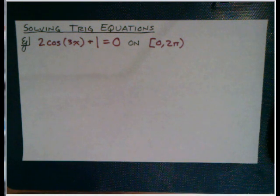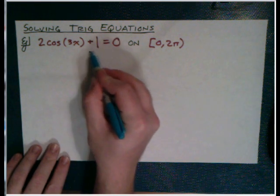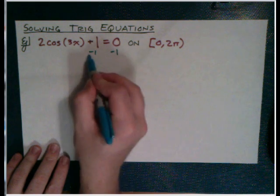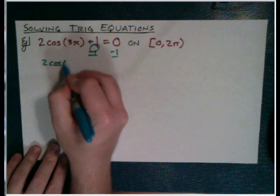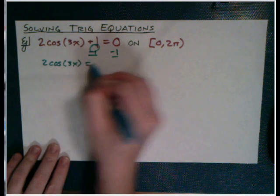So to start off, on this problem, we can at least get into it by treating it like there's nothing different. Like just pretending there's no problem here. We've just got two cosine of blah blah blah plus one equals zero. It's just a normal problem. So to solve that, we would do normal algebra. So I'd subtract one on both sides, make a zero, get two cosine of blah equals negative one half.